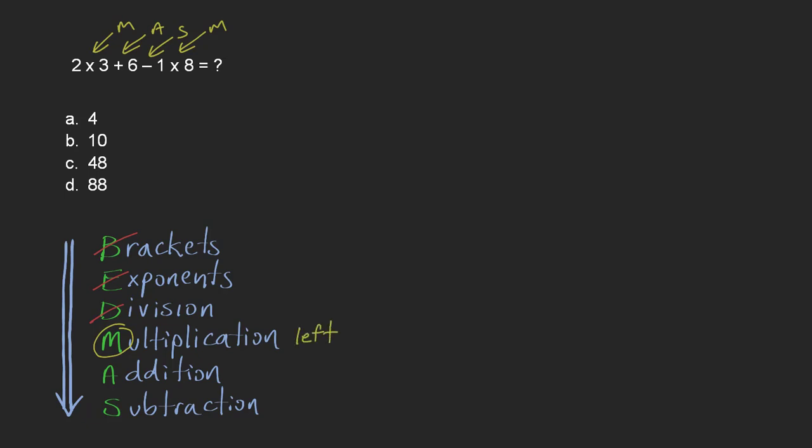So let's do that. 2 times 3 plus 6 minus 1 times 8. So I've got multiplication here and multiplication here, so I'm going to do from left to right.